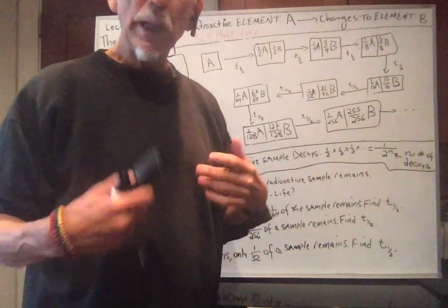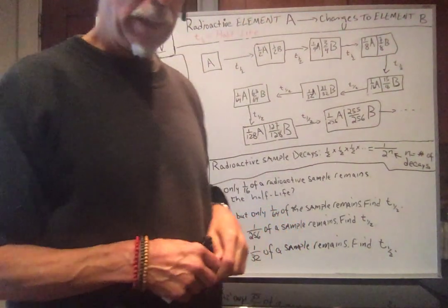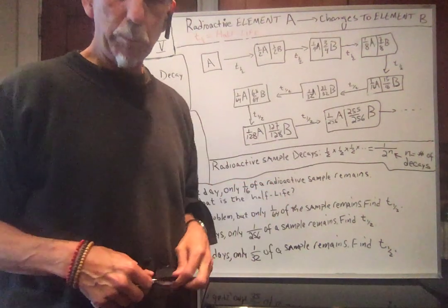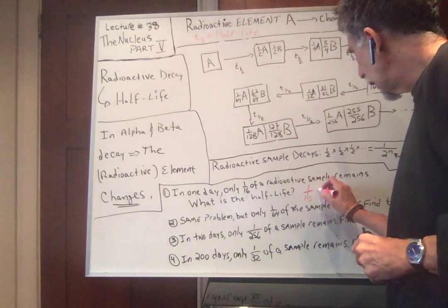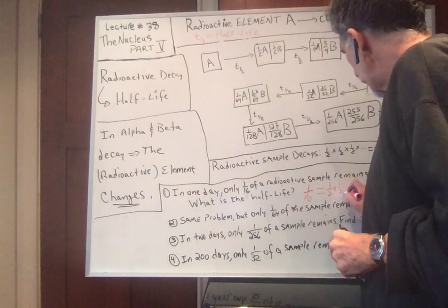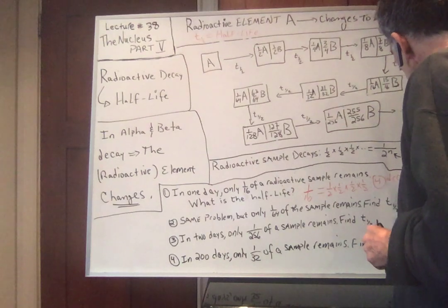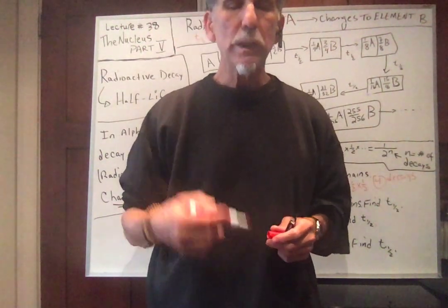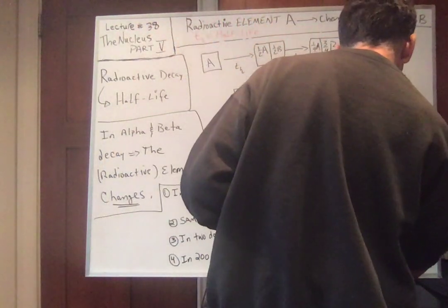Let's look at some problems — all the same type for now so you get the idea. Problem one: in one day, only one-sixteenth of a radioactive sample remains. What is the half-life? One-sixteenth equals one-half times one-half times one-half times one-half — that's four decays in one day. A day is 24 hours, and four decays in 24 hours means one decay takes 24 divided by 4. The answer is six hours.